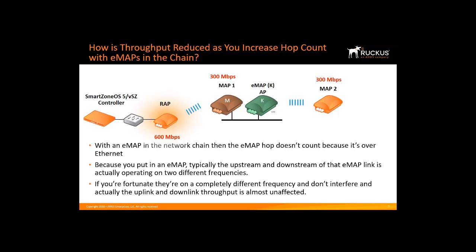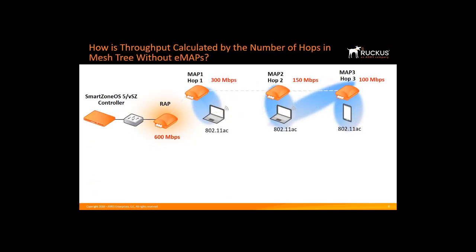How is throughput calculated by the number of hops in a mesh tree without eMAPs? Here we have a core network connected to the root AP via Ethernet, and then MAP one, MAP two, and MAP three connected wirelessly. If the throughput between the root AP and MAP one is 300 Mbps and the same speed applies to M2 and M3, then individual hops are 300 Mbps. Running a speed test between the root AP and M1 gives 300 Mbps.